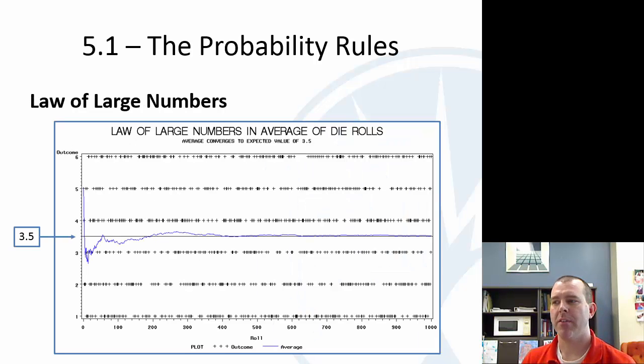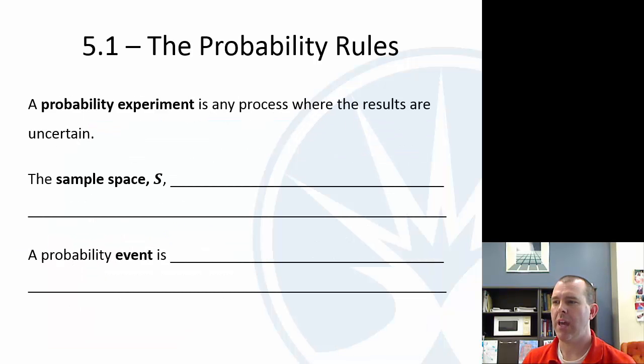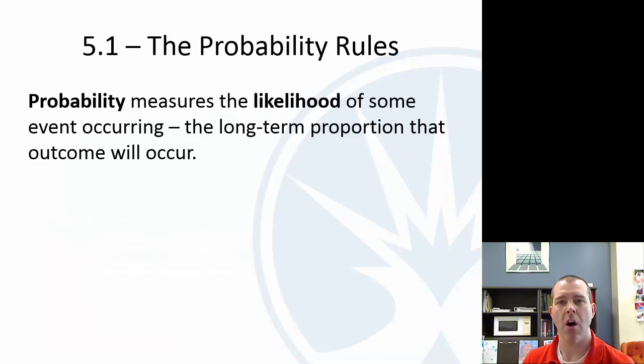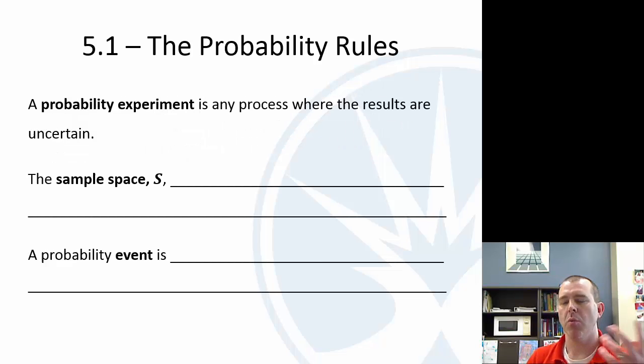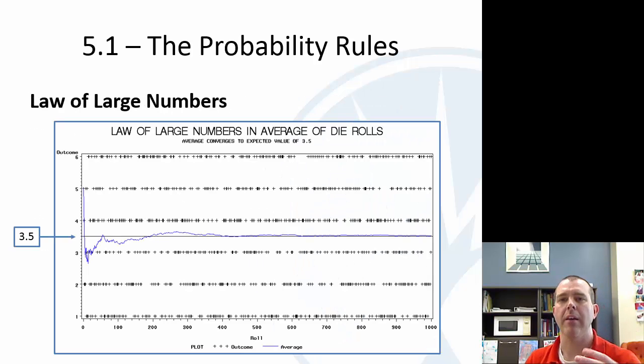An interesting way to think about this is the law of large numbers. So looking at the definition of that probability, it's the long-term proportion. So one way to look at this is, if I roll a die and I look at that,